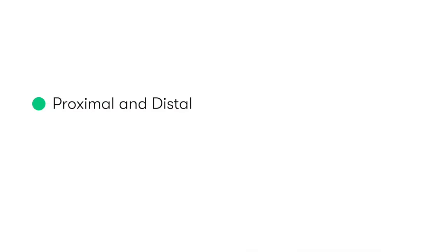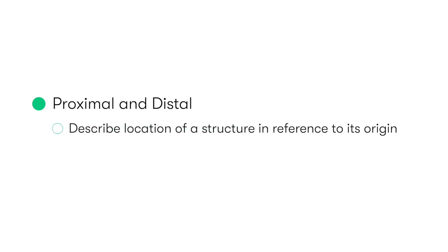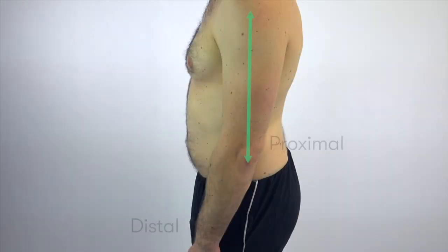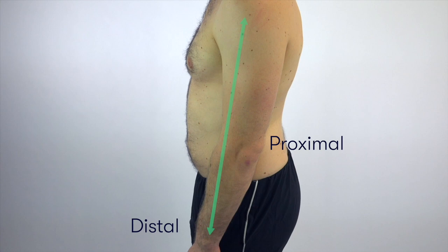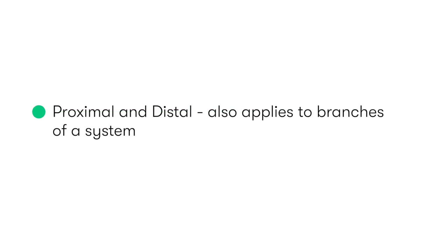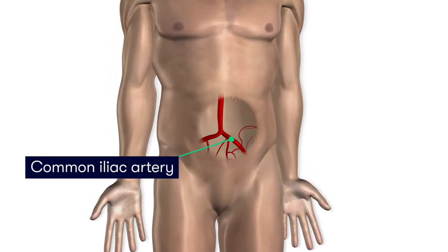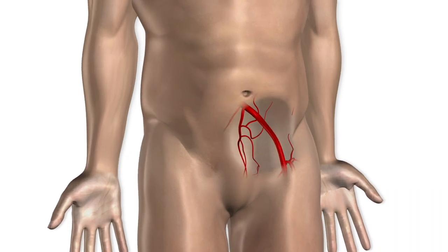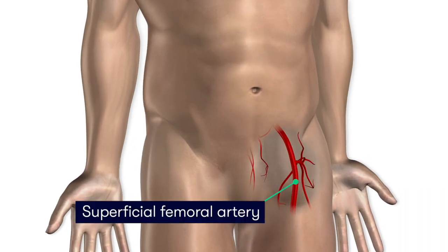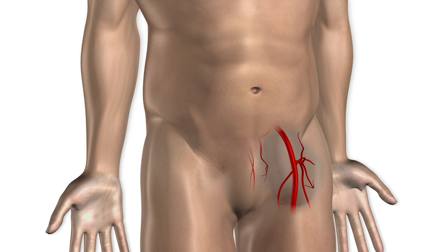Some other important terminology includes proximal and distal, which describe the location of a structure in reference to its origin. For example, in the arm, the elbow is proximal — closer to the origin of the arm — compared to the more distally located wrist. It also applies to branches of a system, such as the arterial system, where the common iliac artery is more proximal compared to the superficial femoral artery, which is located more distally.